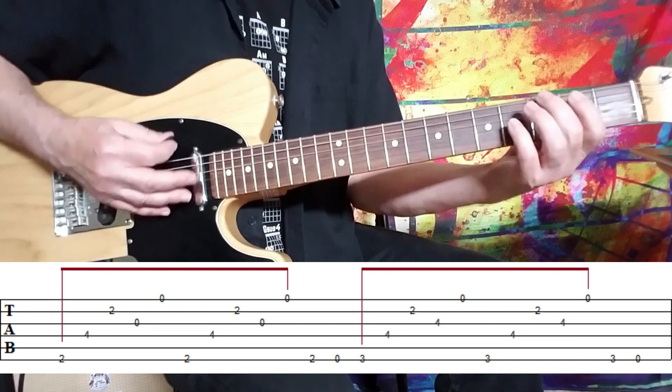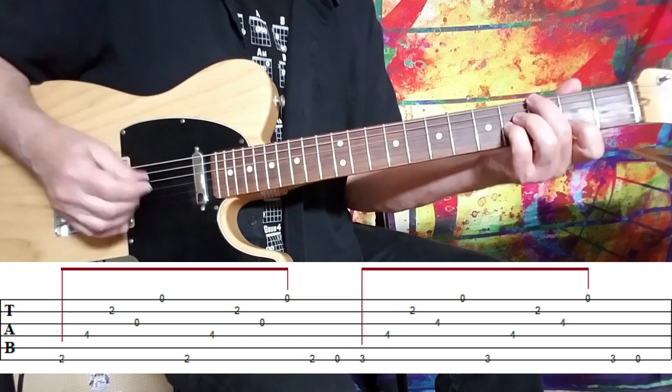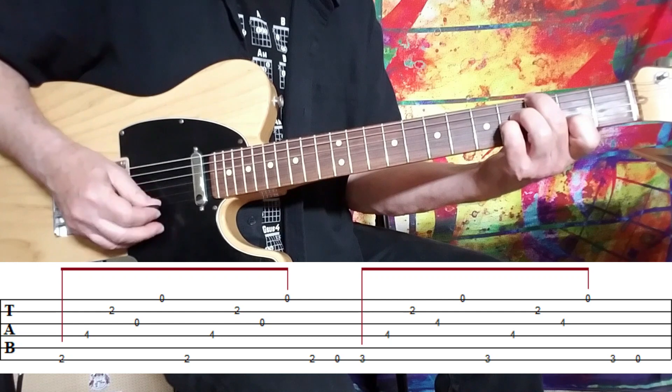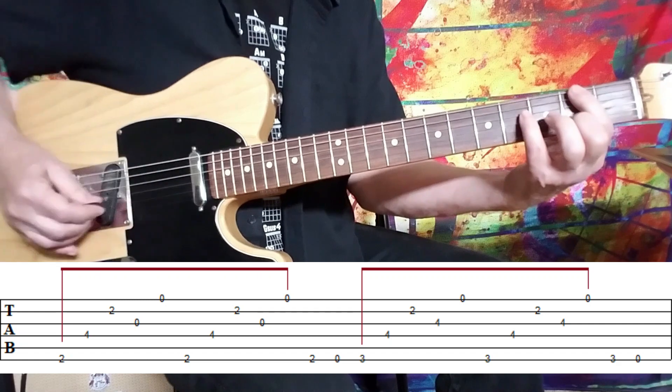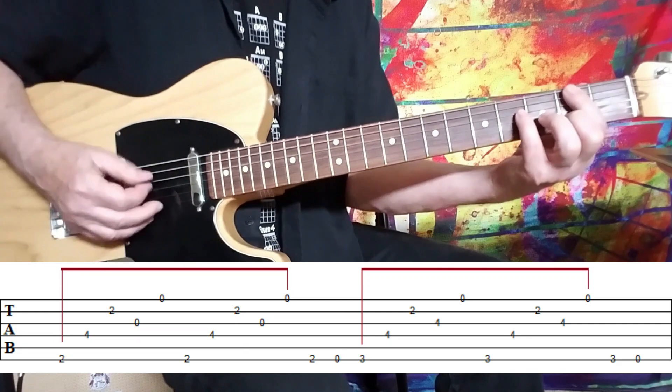And we move to the next chord, same idea - down down up down up, third fret and then the open string. So that whole riff nice and slow is...